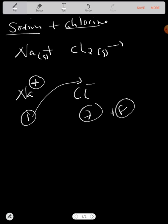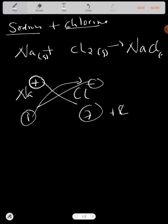Sodium has to lose this electron to chlorine so that chlorine can become eight. When sodium loses this electron, it remains eight in the last shell. There's a bondage forming between the two.